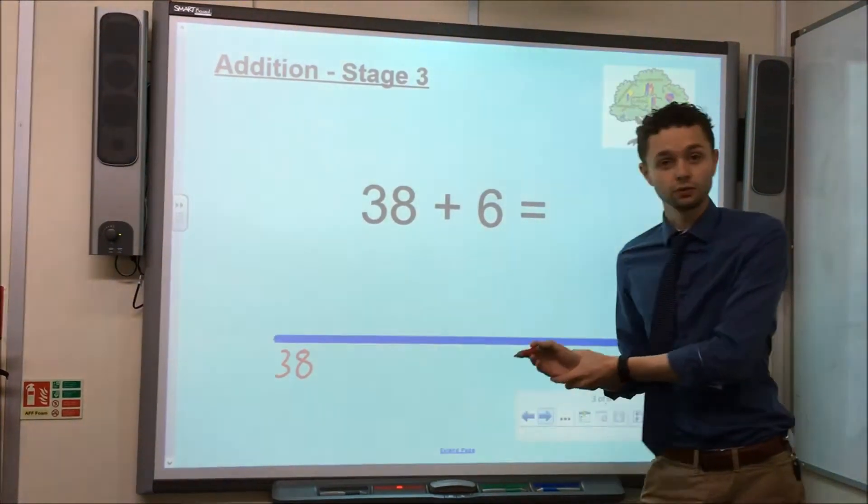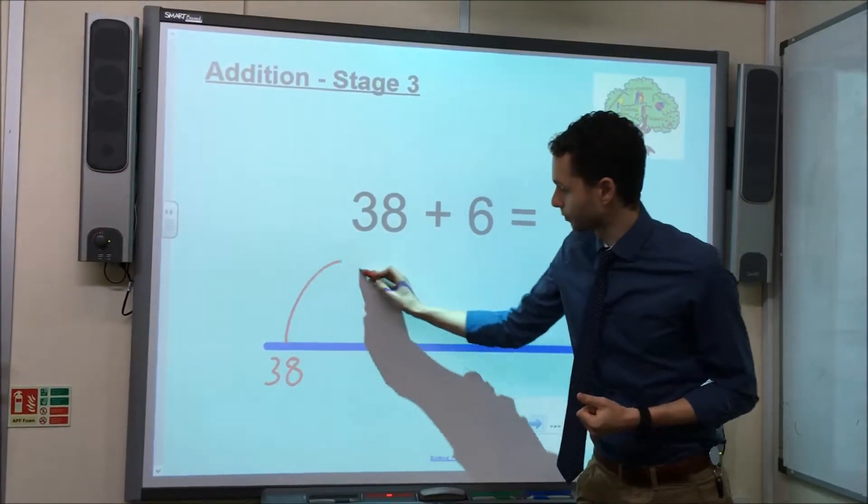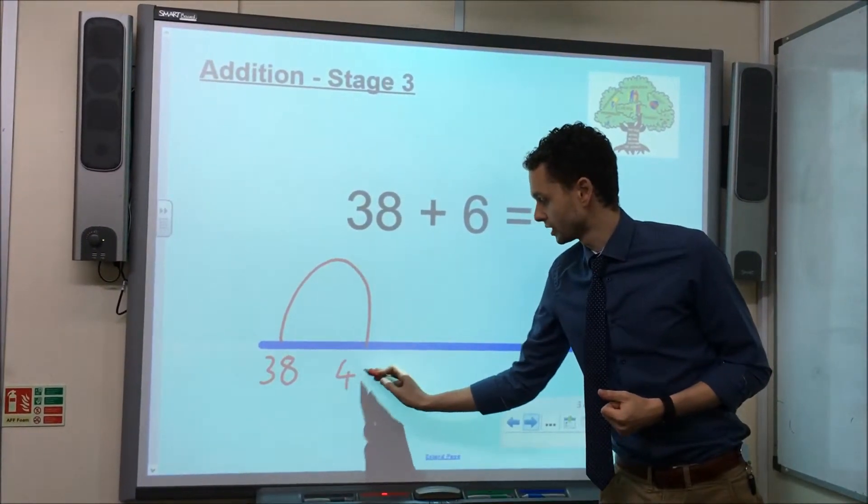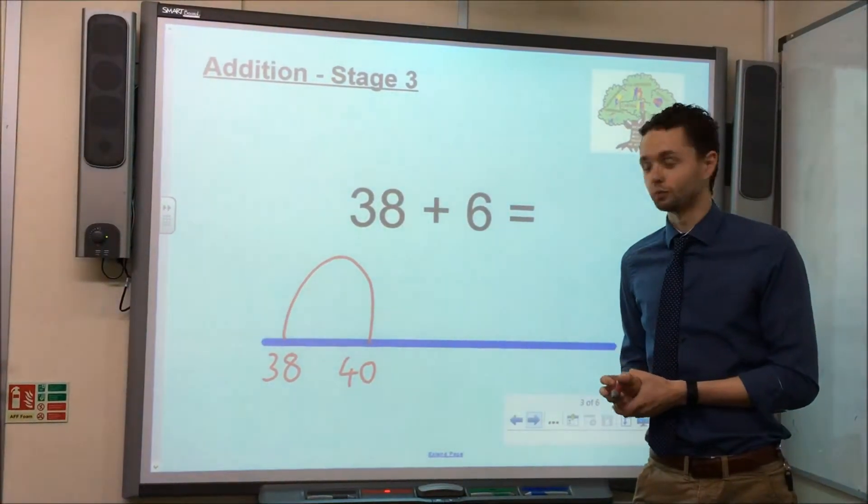So, if we're starting with 38, the nearest 10 is going to be 40. So, we jump from 38 to 40, and as we can see there, that means we have taken a jump of 2.